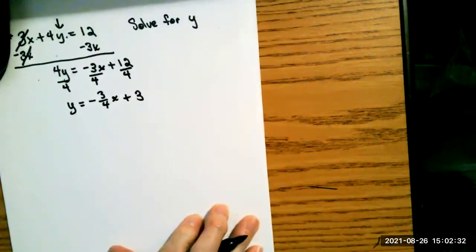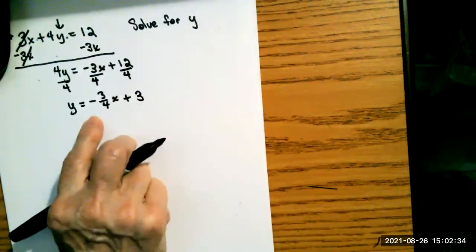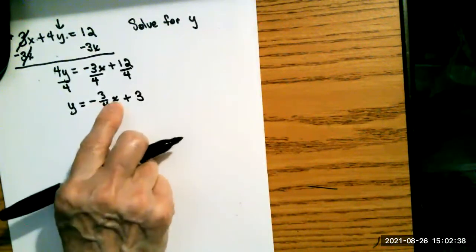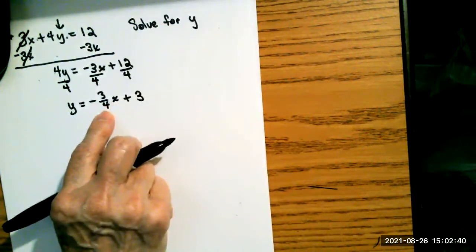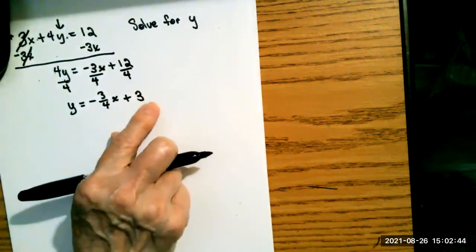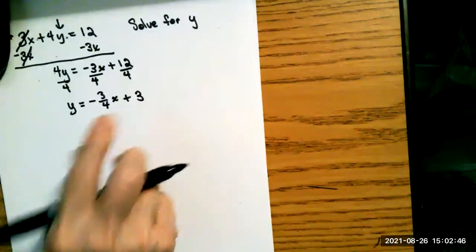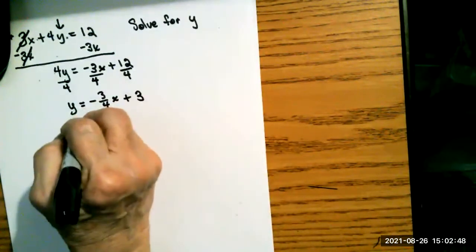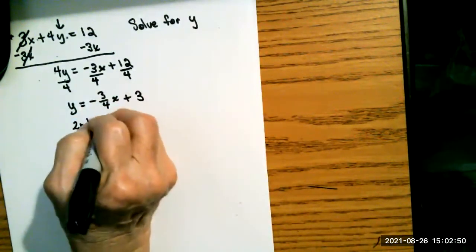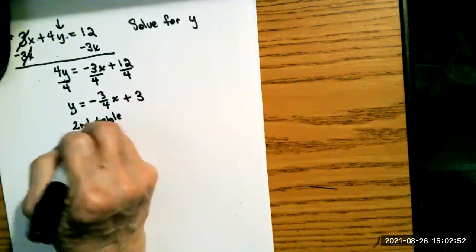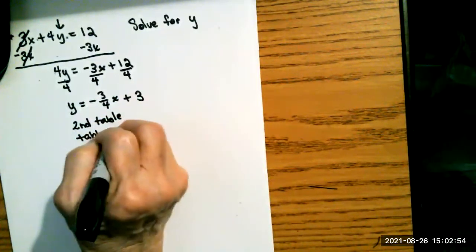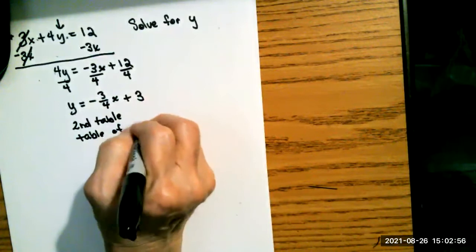Now if I want to put this into my calculator, I would put it in as y equals negative 3 fourths x. And if you have an 83, you'll have to put parentheses around your fractions, plus 3. Then I can do 2nd and table, and it will give me a table of values. In fact, they're ordered pairs.